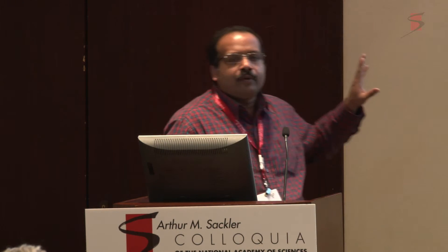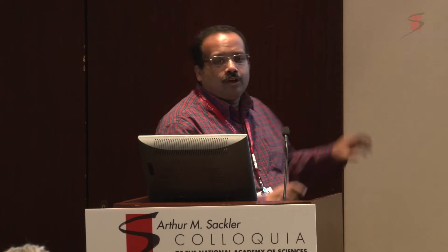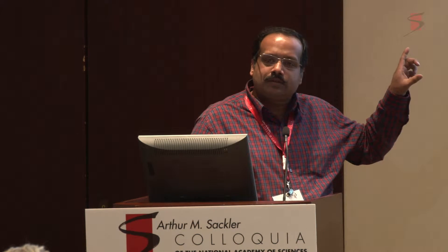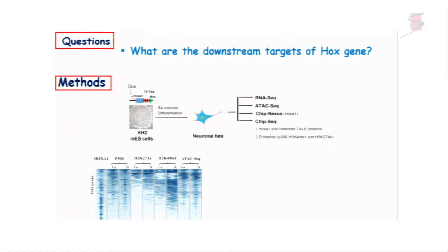The system we are using is the embryonic stem cell-based system, where we can introduce a gene of interest into a specific locus — the Collagen I locus — and we can tag genes accordingly, then differentiate into a specific cell type. For today's purpose I'm showing data related to neuronal fate.